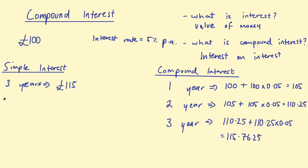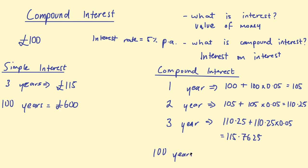Let's consider 100 years now. After 100 years, how much simple interest would we have? We're earning £5 per year, so we'd have £500 after 100 years — adding that on we'd have a total of £600. What about with compound interest after 100 years? What do you think — will it be double or triple? Have a guess.